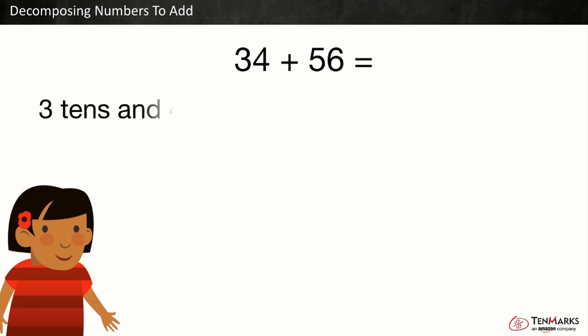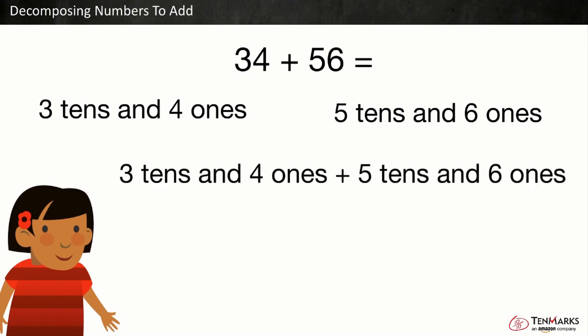34 is the same as three tens and four ones. 56 is the same as five tens and six ones. Now we have three tens and four ones plus five tens and six ones.